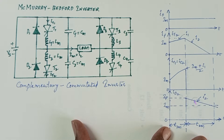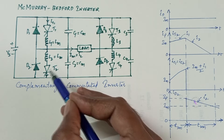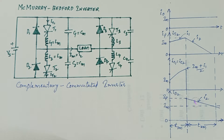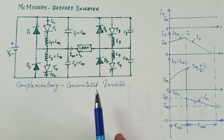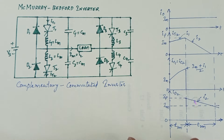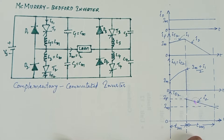In the previous topic we discussed about the auxiliary commutated inverters; now we will discuss about the complementary commutated inverter. If two inductors L1 and L2 are tightly coupled, firing one of the thyristors turns off the other thyristor in the same arm. This type of commutation is known as complementary commutation. The circuit is also known as the McMurray-Bedford inverter.